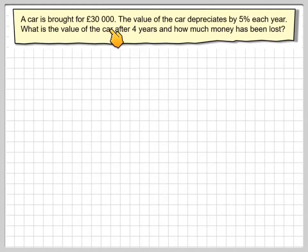A car is bought for £30,000. The value of the car depreciates by 5% each year. What is the value of the car after four years and how much money has been lost?